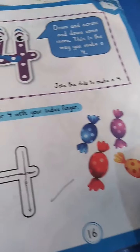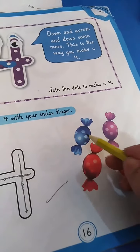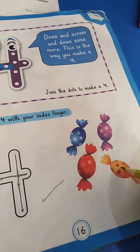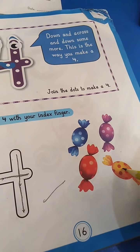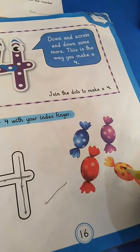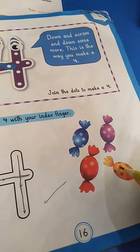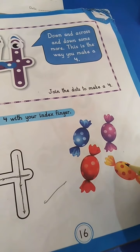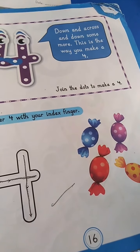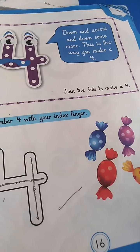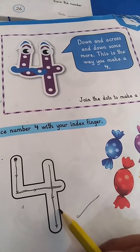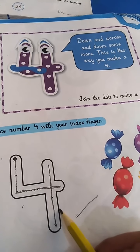Let's count these candies. 1, 2, 3, 4. How many candies are these? 1, 2, 3, 4. What's the number that comes after 3? It's 4. Today we learn the digit number 4. What's this? It's 4.